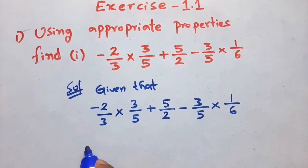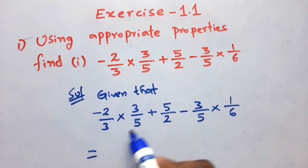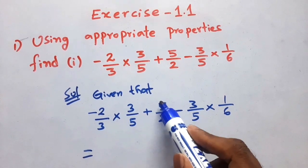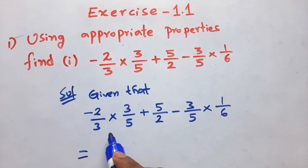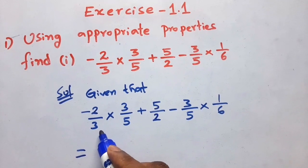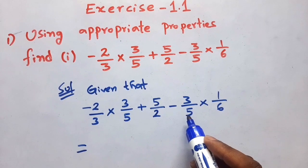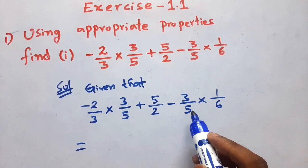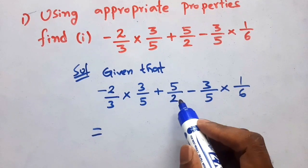Then you have to observe each term. This is the first term, this is the second term, this is the third term. You have to see: minus 2 by 3 into 3 by 5 is here, and here also minus 3 by 5 is there. So what you have to do is apply the commutative property.